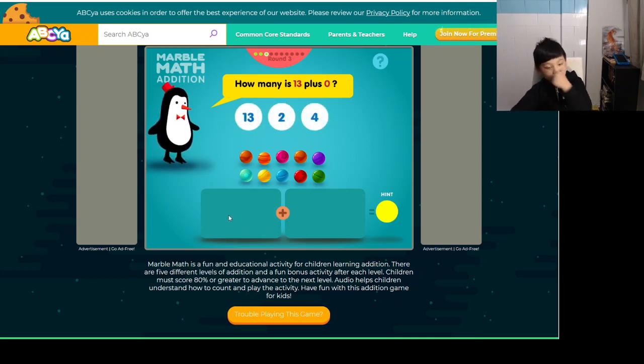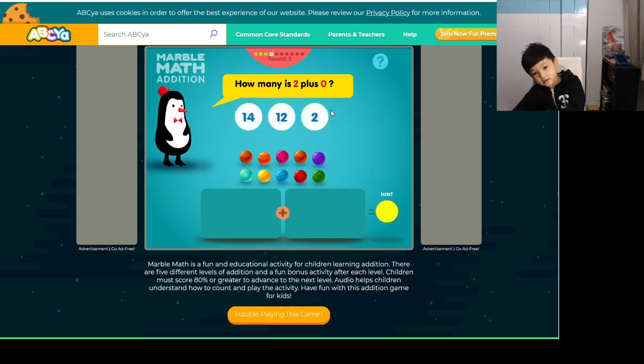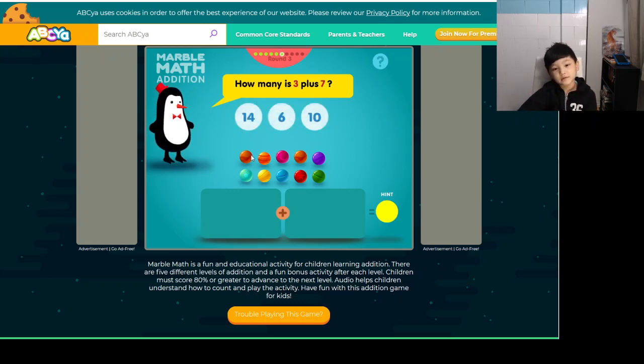And same, 13 plus 0 is going to be 13. 2 plus 0, we already did this in round 1 and 2. It's 2. 5 plus 5, it has to be 10 because there's no way it can be 1 and 14 is less. So it has to be 10.